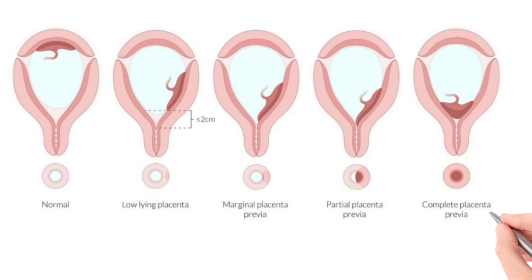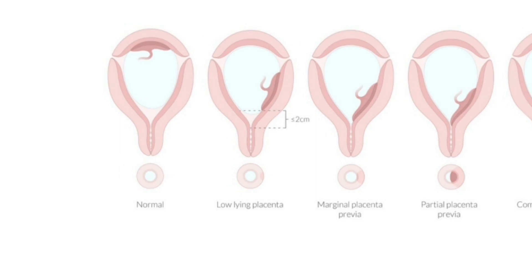In central placenta previa, the placenta covers the internal os even when it is fully dilated. The image illustrates these types: in figure one a normal placement is shown; in low-lying placenta the distance between the placenta and internal os is less than two centimeters; in marginal it is very close to the internal os; and in complete placenta previa the placenta is fully obstructing the internal os.